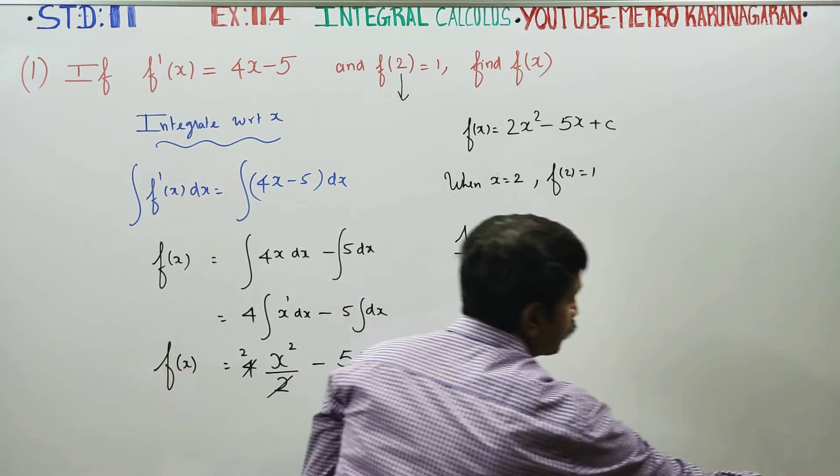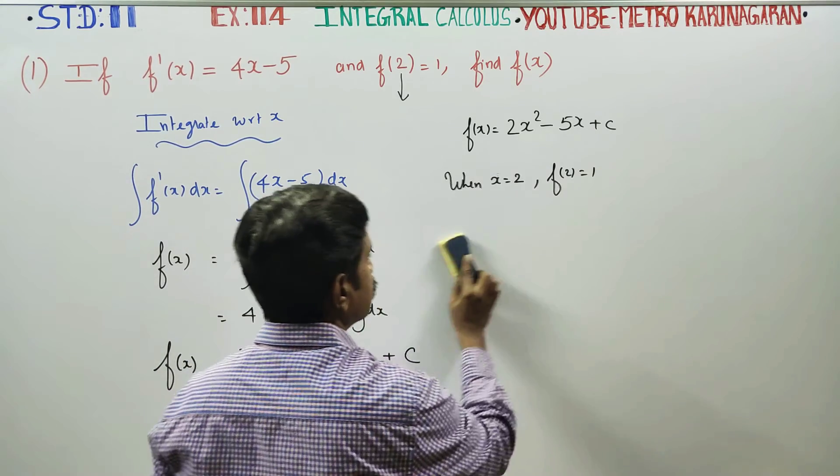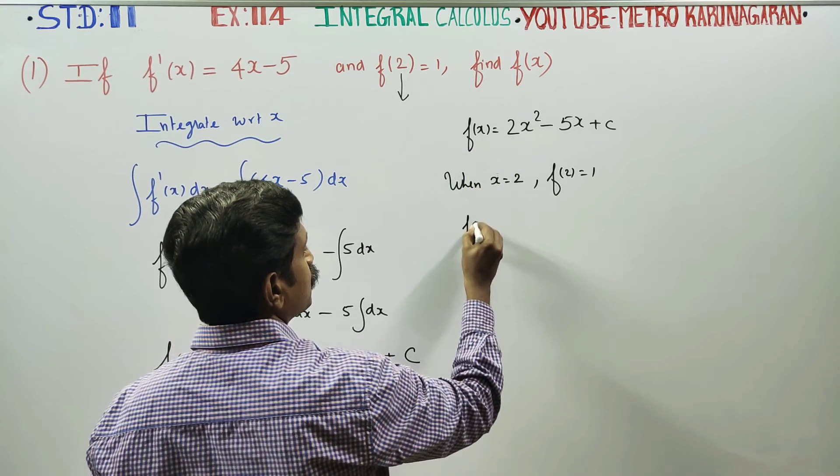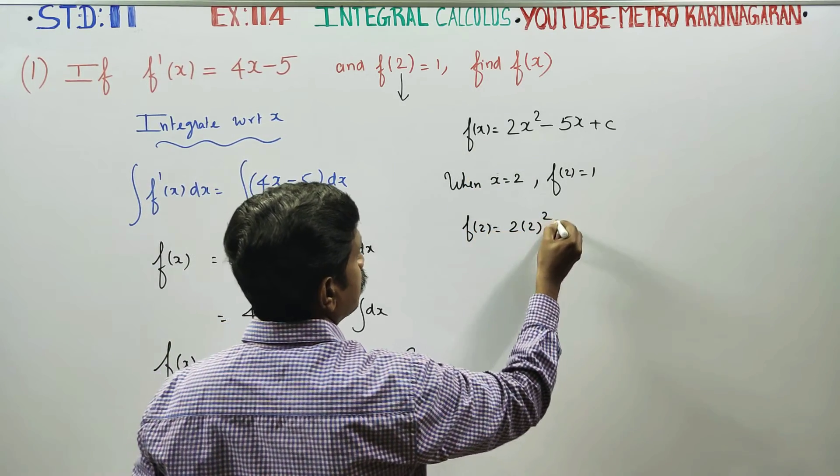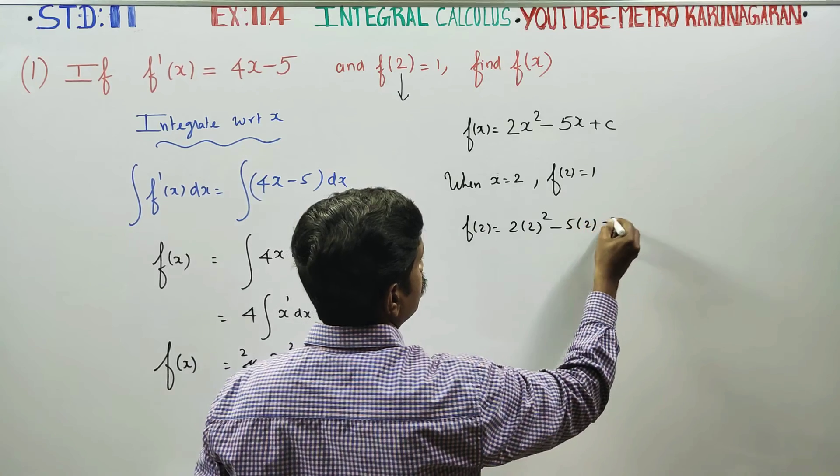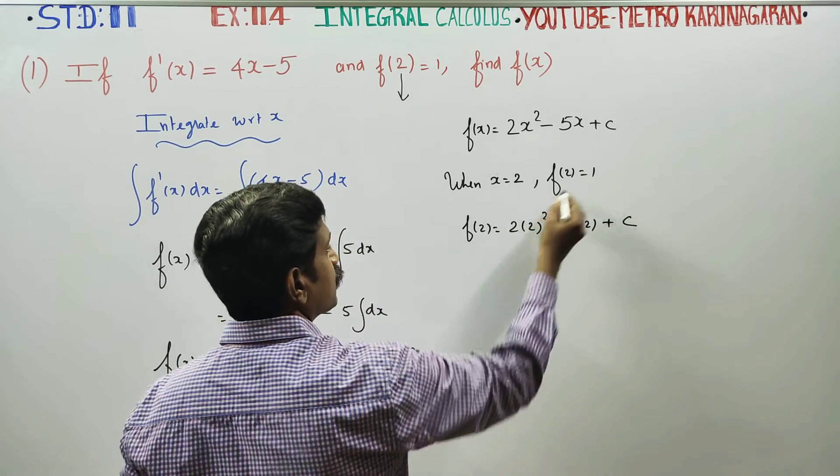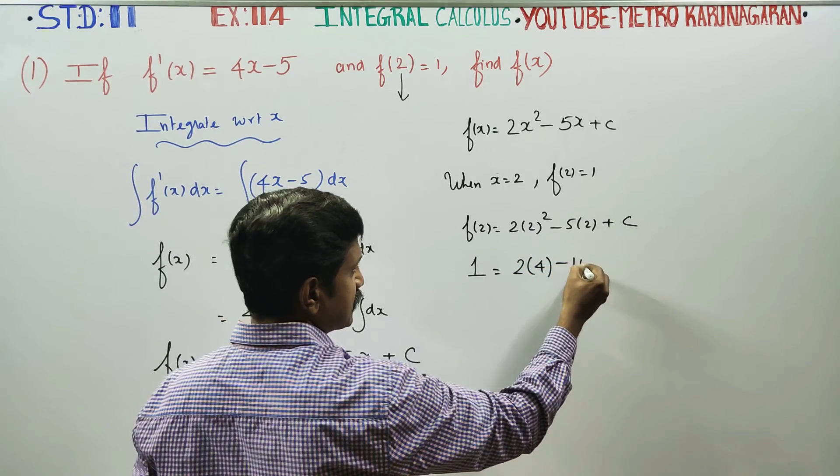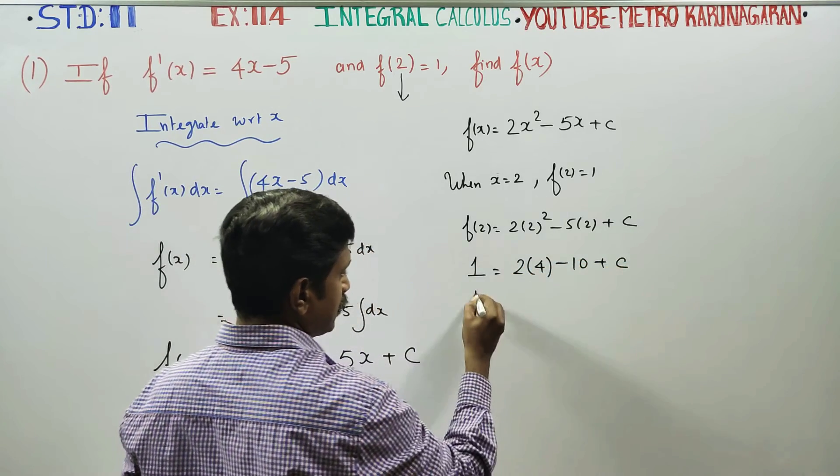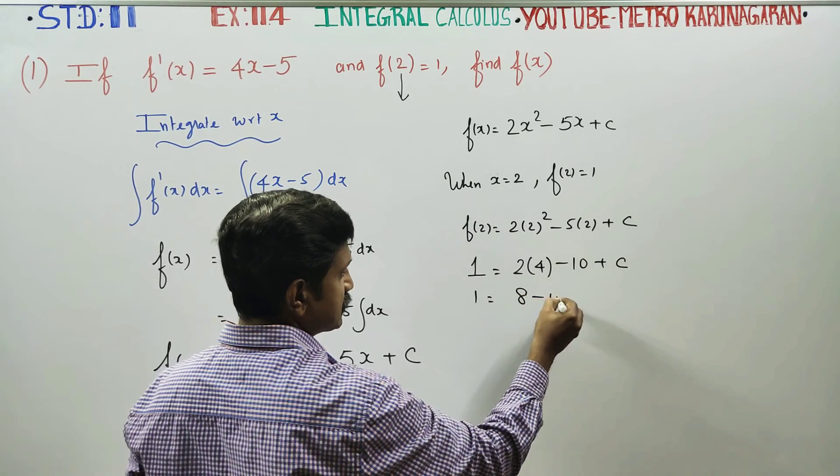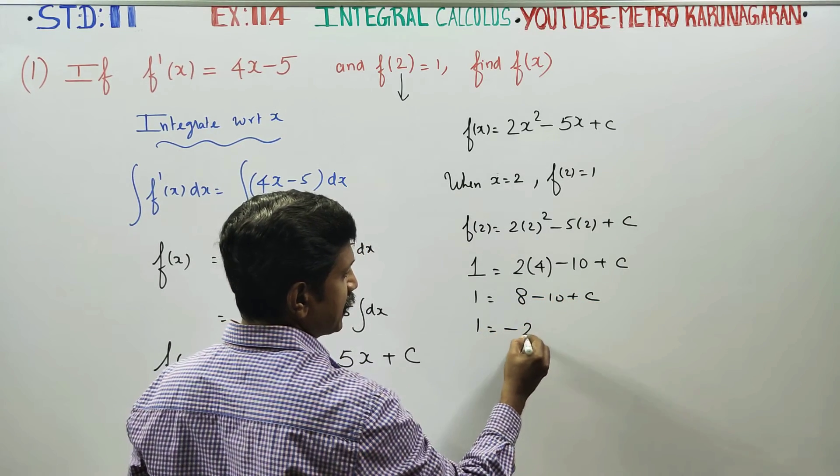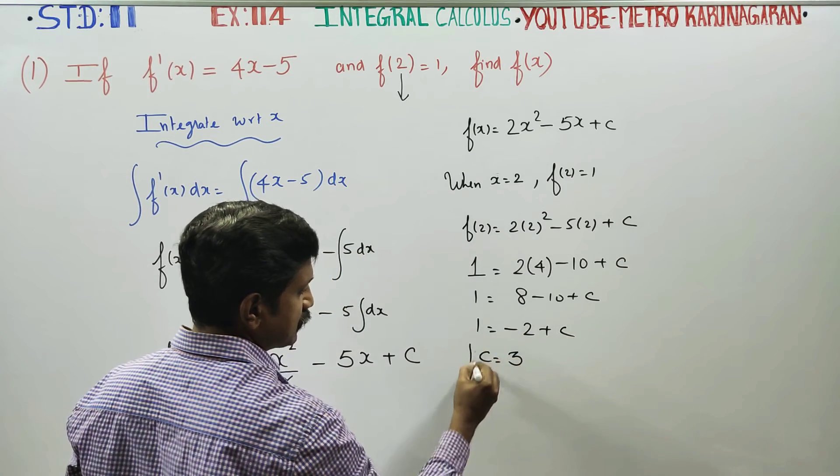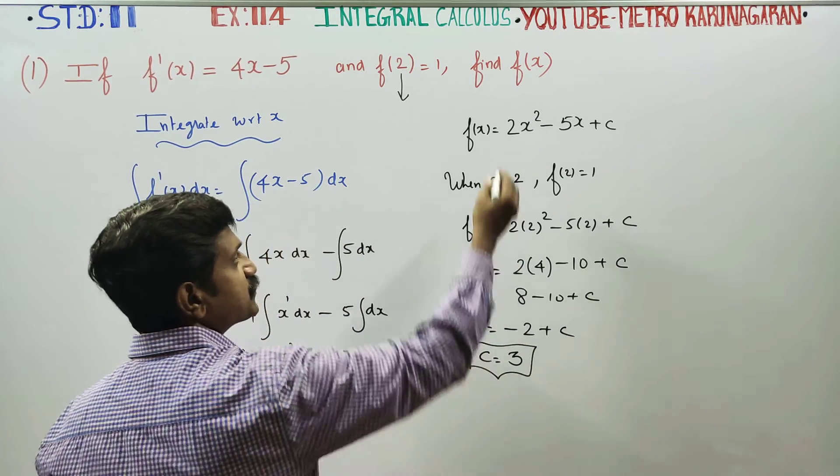f(2) is equal to 2 times 2² minus 5 times 2 plus C. 1 is equal to 2 times 4 minus 10 plus C. 1 is equal to 8 minus 10 plus C. 1 is equal to minus 2 plus C. Therefore, C is equal to 3.